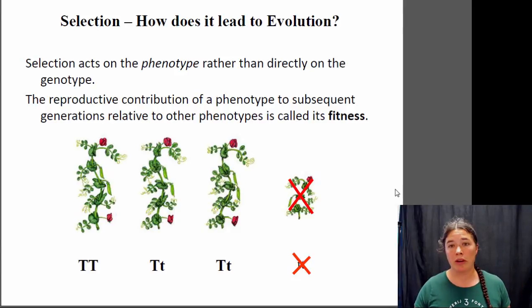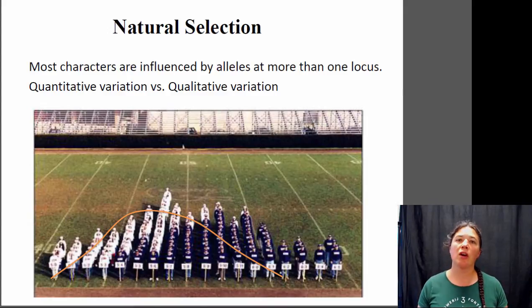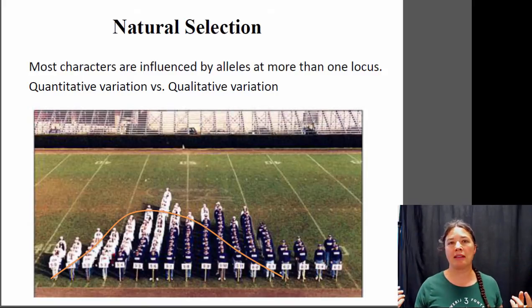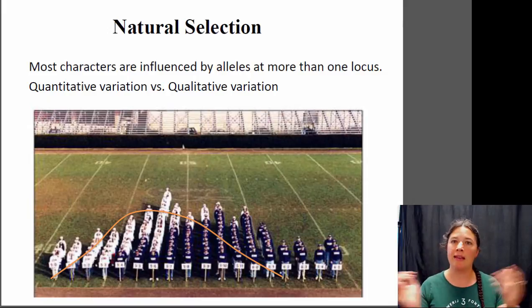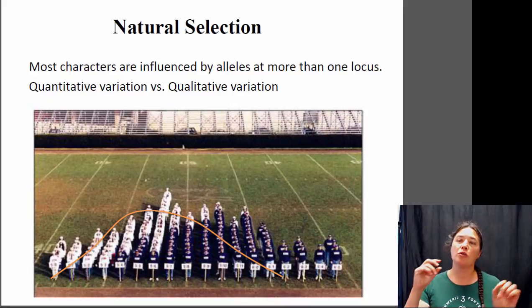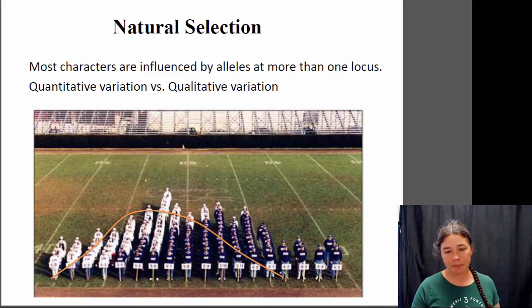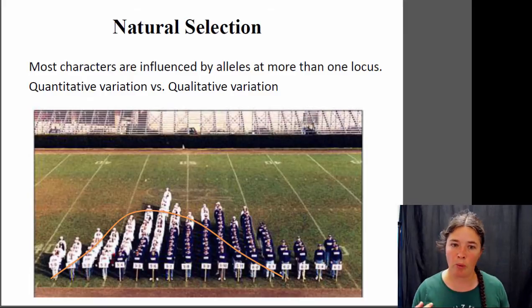Most traits that we might be interested in are not determined simply by one gene with two alleles — it's usually a lot more complicated. Normally you have what we call quantitative variation versus qualitative variation. Rather than short peas and tall peas where you have two qualitative categories, if you're looking at the human population we have a variety of heights — you can be four foot eleven or six foot three. This is quantitative variation: you can measure each individual and they have a number associated with that variation spread over a wide range. Most people fall in the middle of that range. This illustration shows people organized by height — most fall in the middle, but there are some at either extreme.